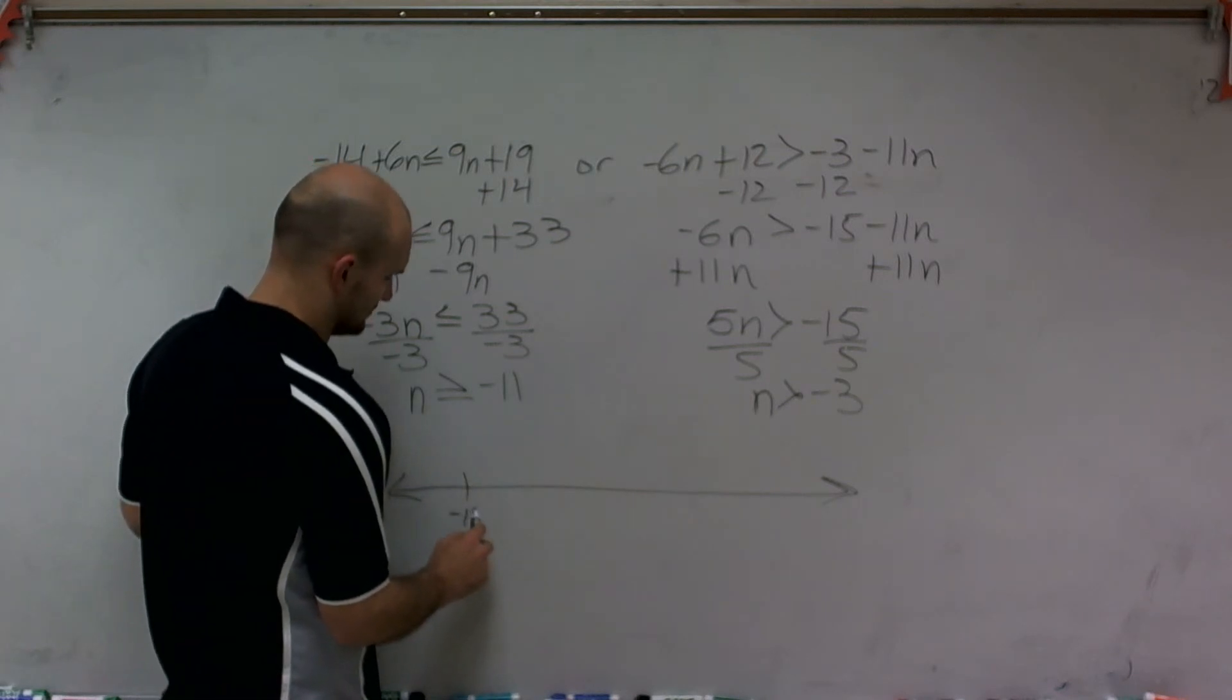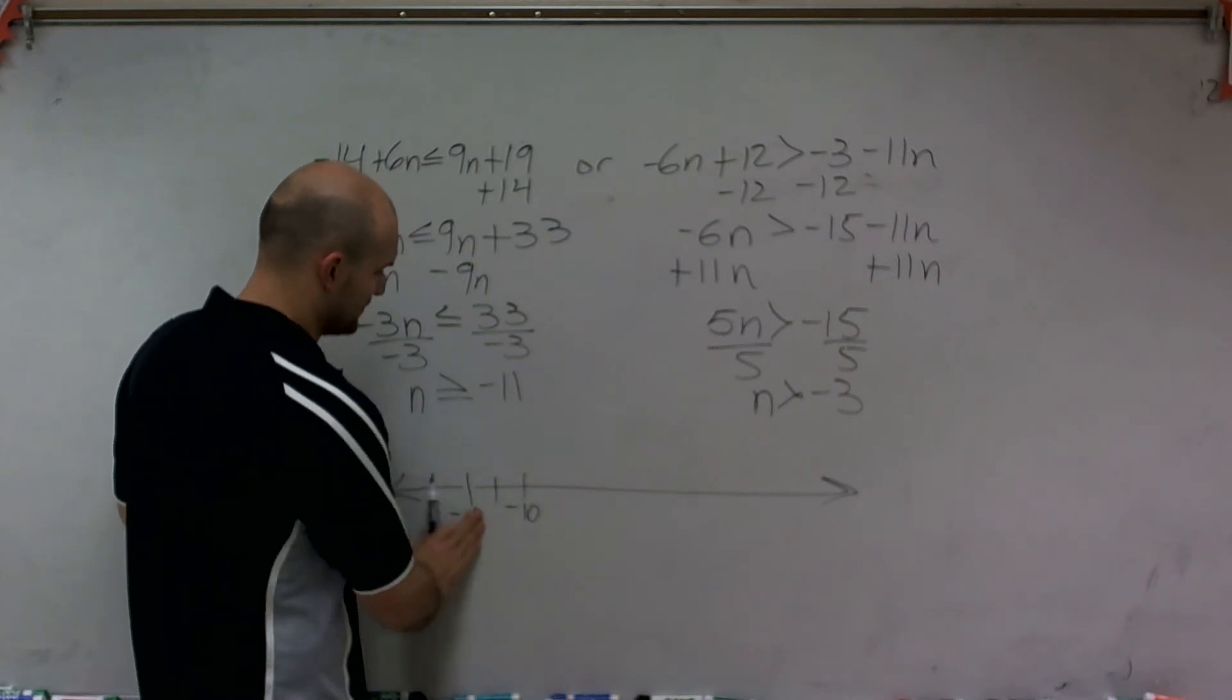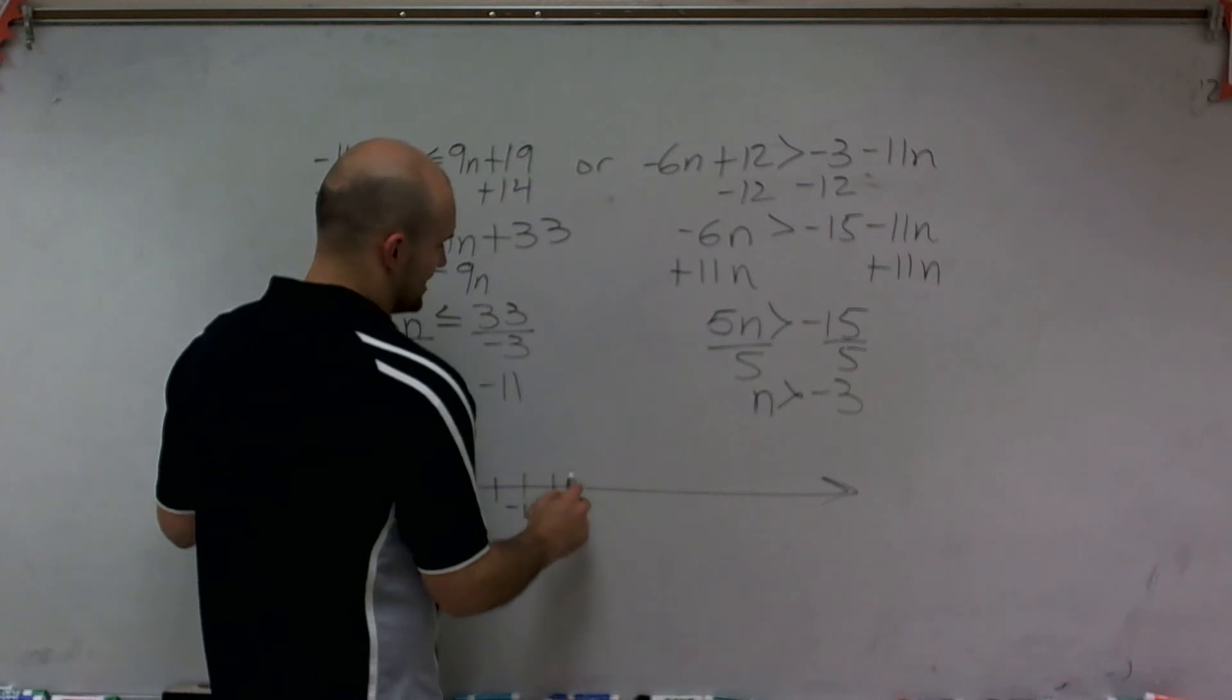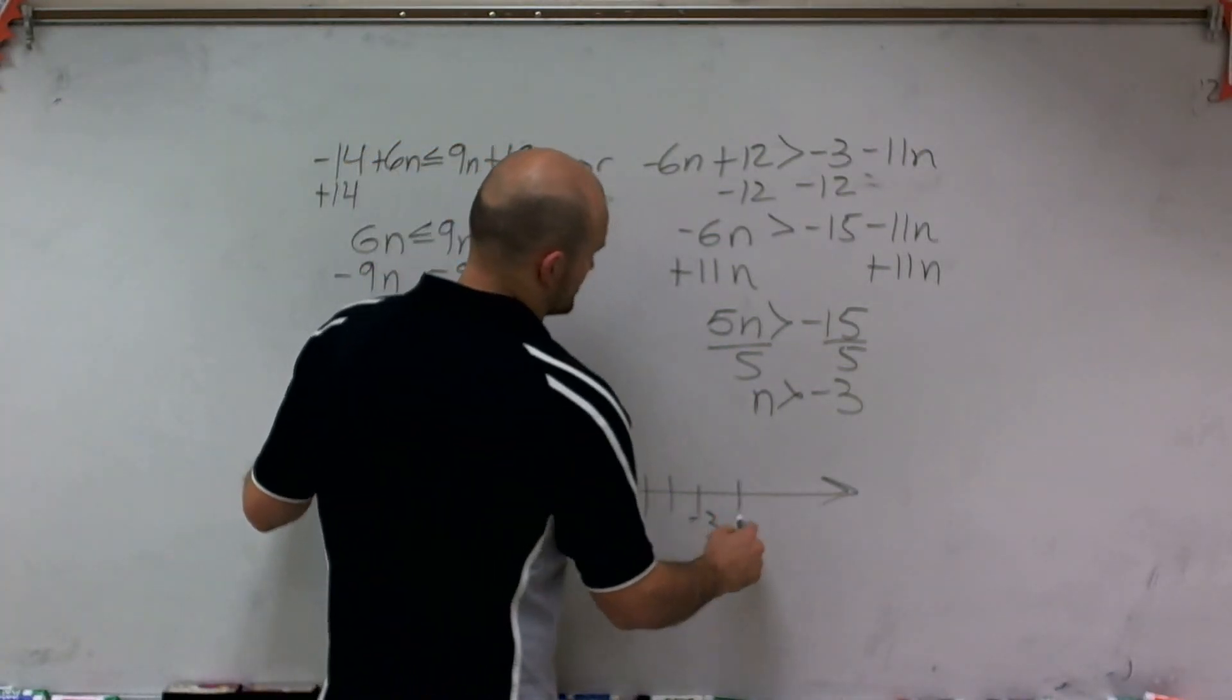So that means that'd be negative 11, negative 12, negative 13, negative 9, 8, 7, 6, 5, 4, 3, 2, 1, 0.